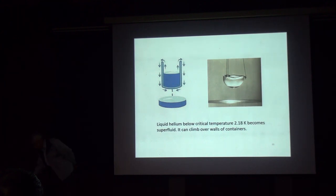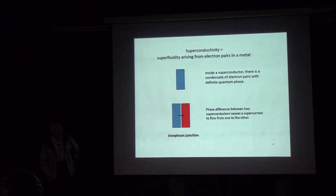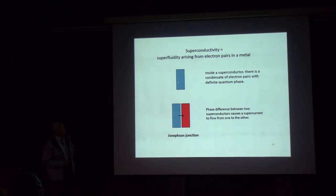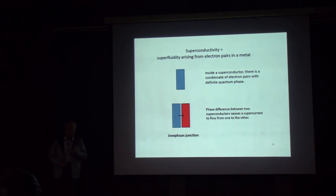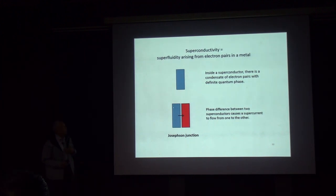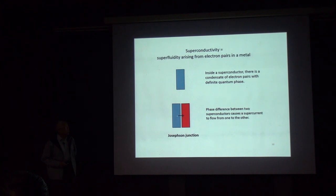Superconductivity is a form of superfluidity. As Ginzburg and Landau described, inside a superconductor there is an order parameter with a definite quantum phase — due to Cooper pairs condensed into a single quantum state. If you place two superconductors with different phases adjacent to each other, the phase gradient forces a current from one to the other: that is the Josephson effect, which is very useful in industry.